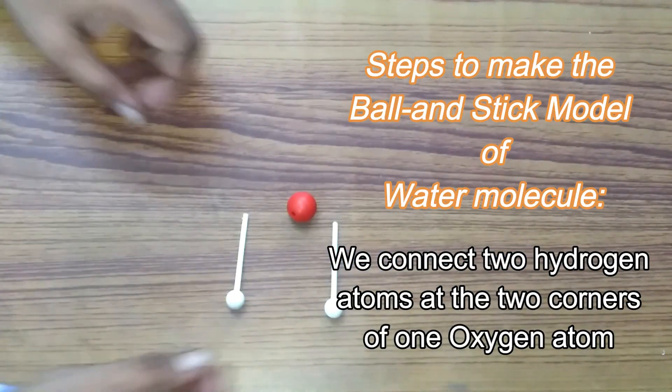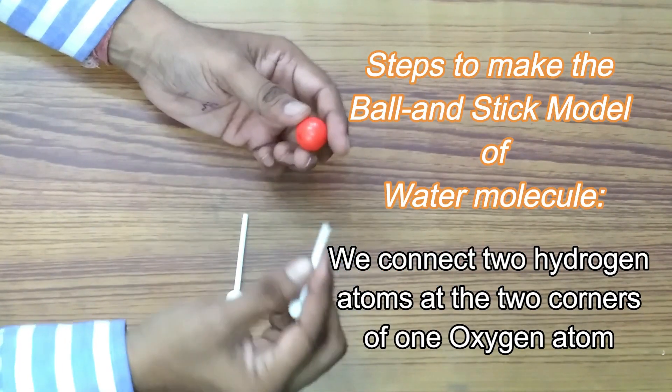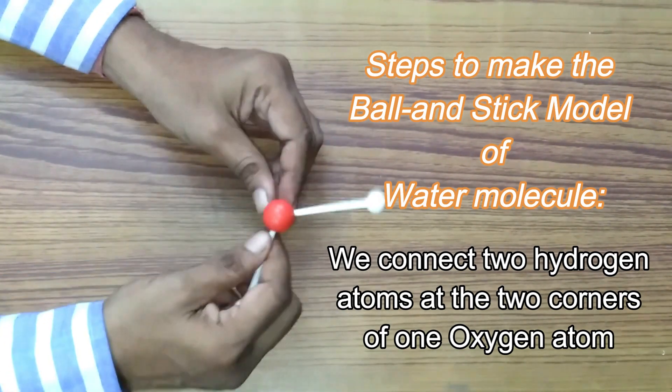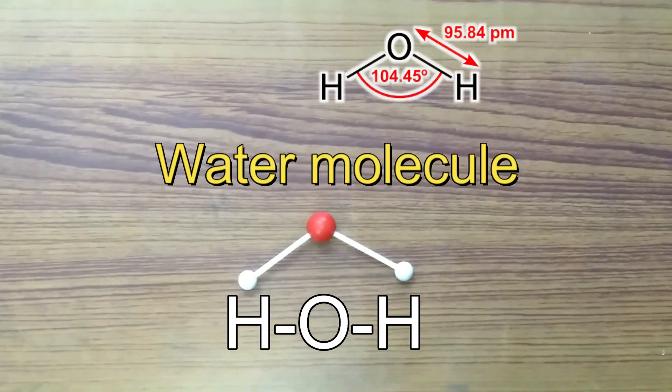To make the molecular model of water molecule we connect two hydrogen atoms at the two corners and the molecule is made as such.